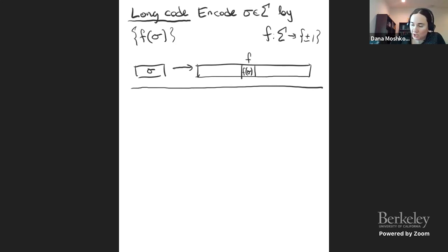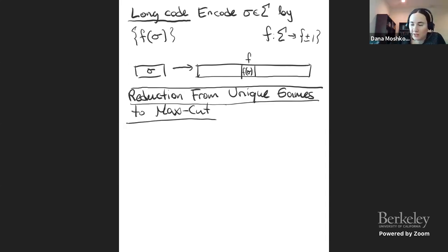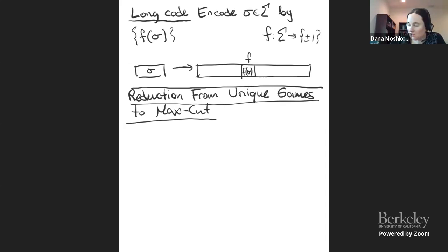Now I can show you the reduction from unique games to MaxCut. I start with a unique games instance — a graph with an alphabet for labels and some permutations — and I generate a MaxCut instance (another graph). For every vertex V of the unique game and for every function f from Σ to ±1, I have a vertex in the MaxCut instance, which I'll denote f(σ_V). Each vertex V has a block of many vertices corresponding to its long code encoding.